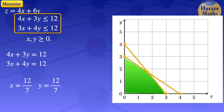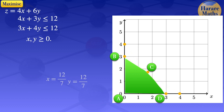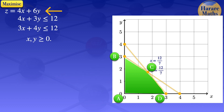I'll label the corner points of the feasible region as A, B, C, and D, where C is the point where the two lines intersect. The next step is to evaluate the objective function z equals 4x plus 6y at each of the corner points A, B, C, and D.